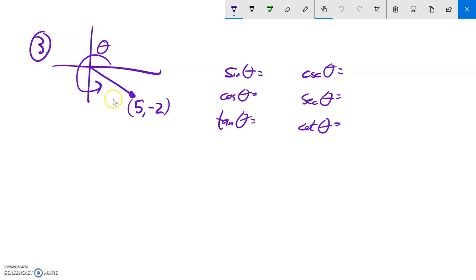We know this rotation terminates at the point (5, -2), 5 over and 2 down. So if we think about this triangle, our x value here is 5 and our y value here is negative 2.